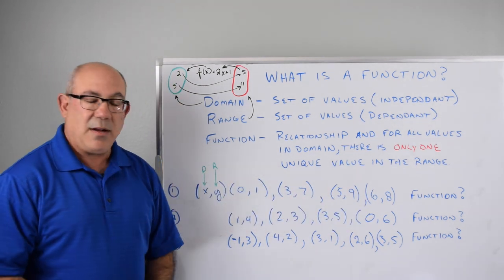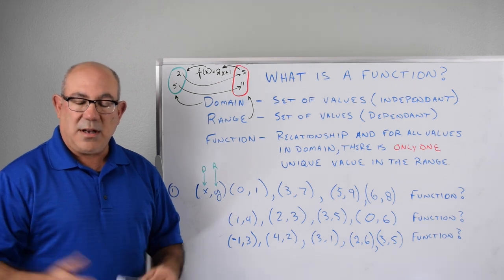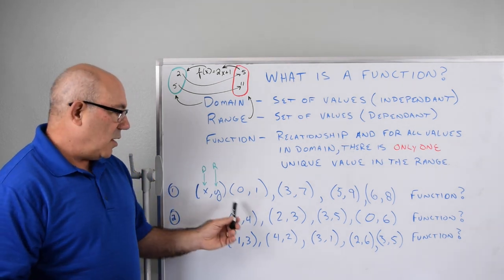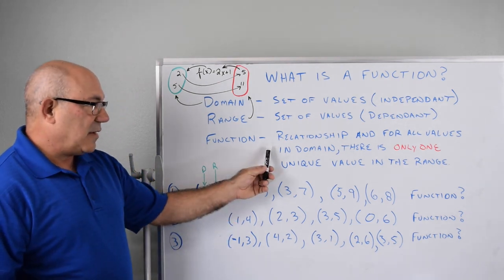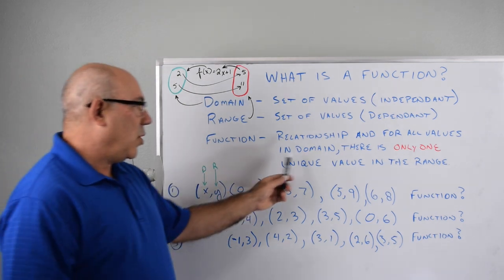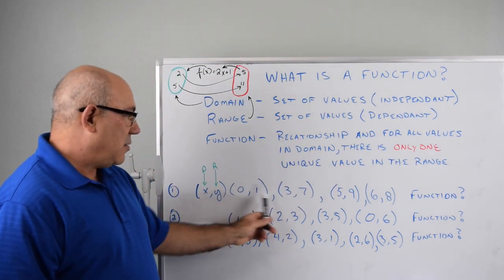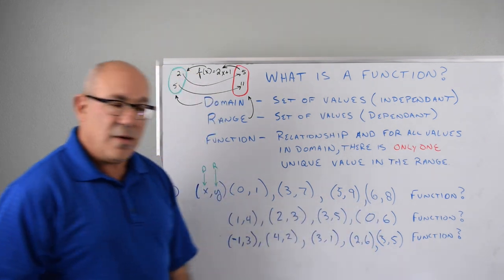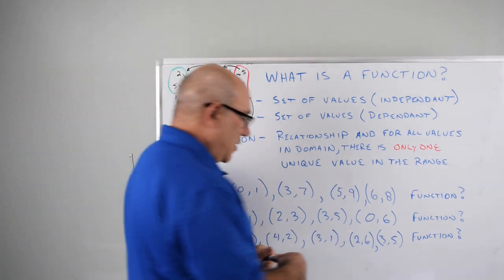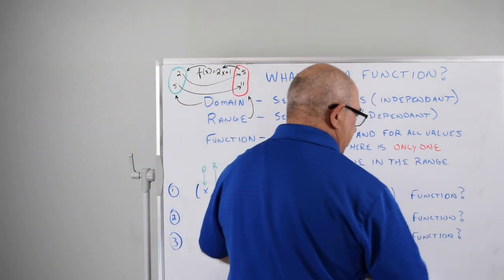And it's never generated by a point in two different ways. So we would say that this would pass the test because there is only one unique value in the range for every value in the domain. So the answer for this one would be yes.